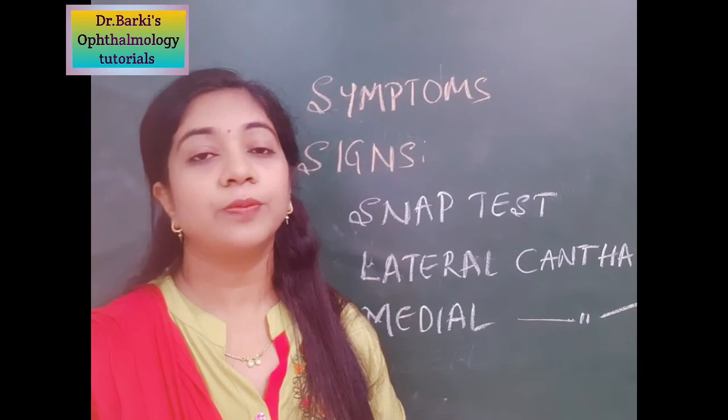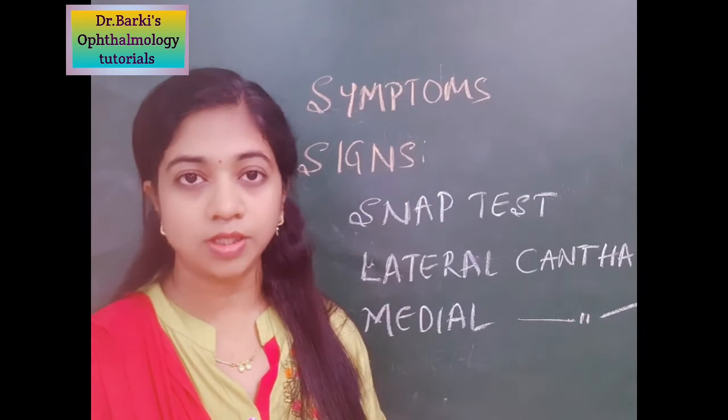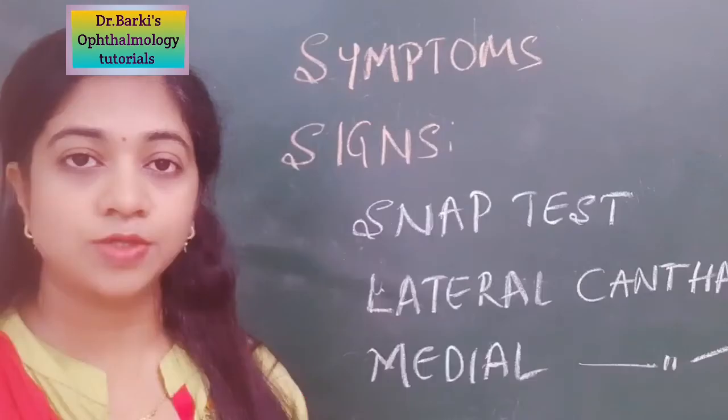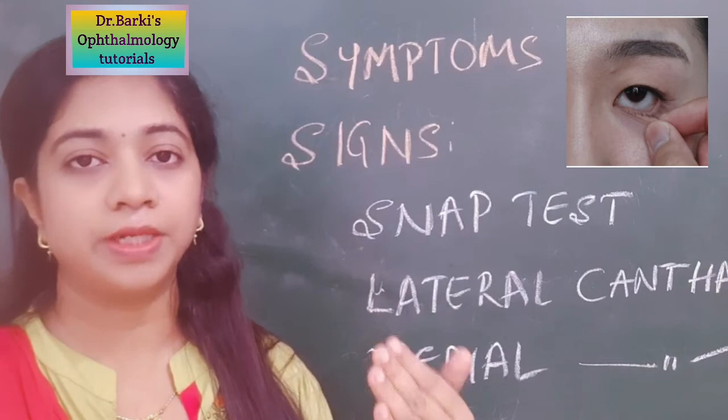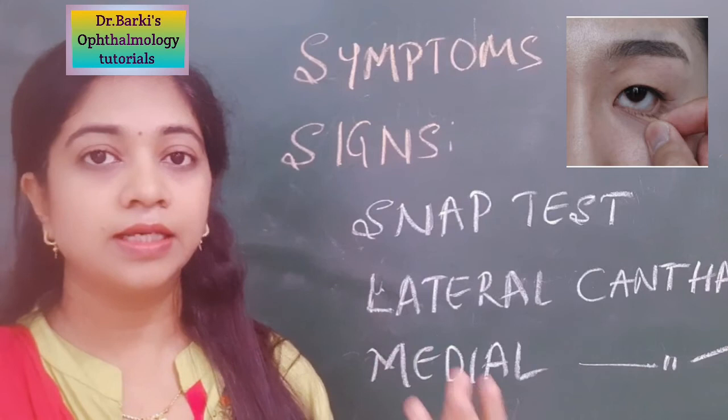When you have made a diagnosis of ectropion, you should do tests to confirm whether there is only horizontal lid laxity or the medial canthal tendon is also weak or the lateral canthal tendon is also involved. The first one is the snap test. You pull the middle of the lower eyelid almost 8 mm away from the globe and then just release it. Normally it should go back immediately to oppose the globe. If it is taking more time, or even when the patient blinks it is not going back to its normal position, that indicates horizontal lid laxity.